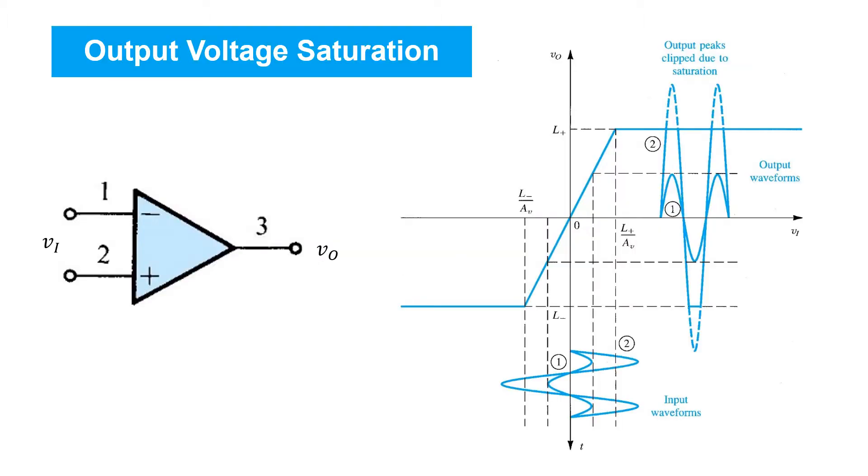One of these large signal non-idealities is output voltage saturation, which we've already discussed. Although we expect the op-amp to provide a large gain for any input voltage, in fact, it can only provide that large gain for a relatively narrow range of input voltages. That's because there's a limit, a positive and a negative maximum limit output voltage that the op-amp can provide. Output voltages that try to exceed these limits are clipped due to saturation.